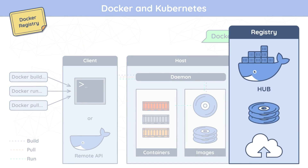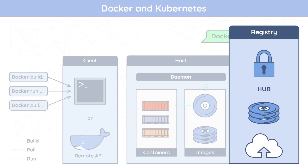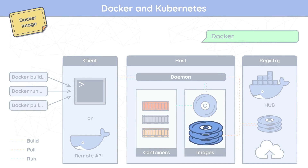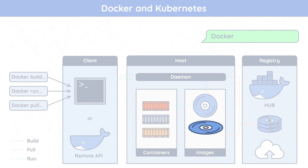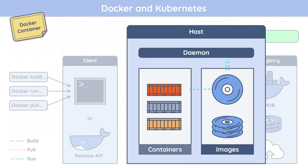A Docker registry is the place that stores Docker images. Docker Hub is a public registry that can be utilized by anyone, and Docker is configured to look for images on Docker Hub by default. However, you can run your own private registry if needed. An image is a read-only template with instructions for creating a Docker container. Usually, an image is based on another image with some additional tweaking — for example, you may build an image based on the Ubuntu image but install the Apache web server and your application along with the required configuration.